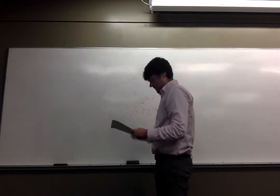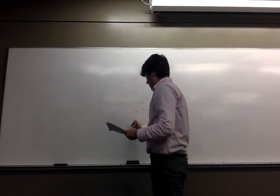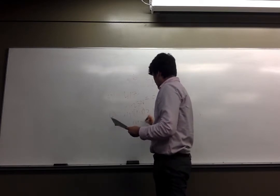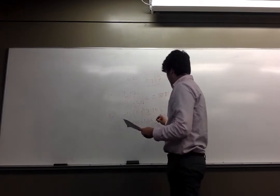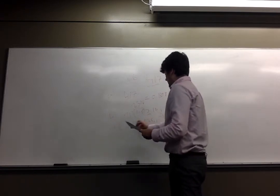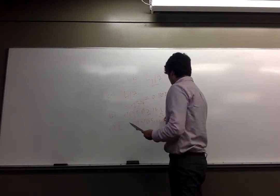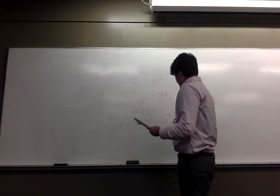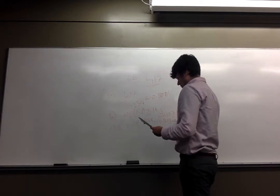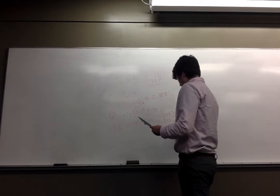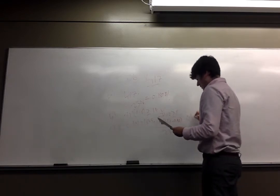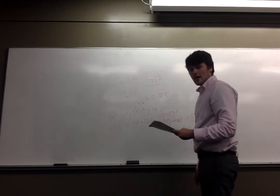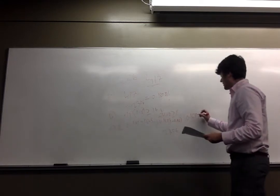So the lower bound L is 0.181 minus 1.645, minus because it's the lower bound, and then we multiply that by this number again, 0.181, and then times that by 1 minus 0.181 over the sample size, which is 2,306, and that's going to give you 0.168 for the lower bound.